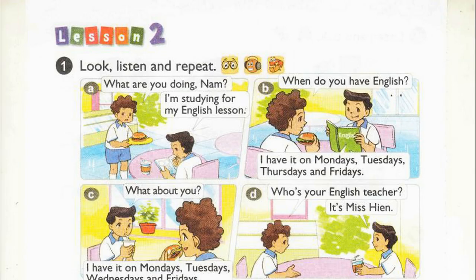Page 54, Lesson 2, Activity 1. Look, listen and repeat. A. What are you doing, Nam? I'm studying for my English lesson. B. When do you have English? I have it on Mondays, Tuesdays, Thursdays and Fridays.